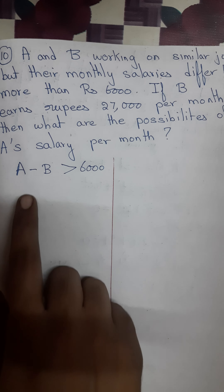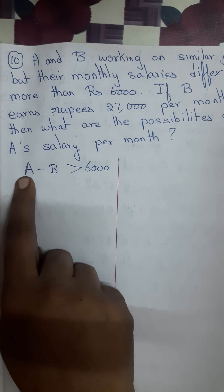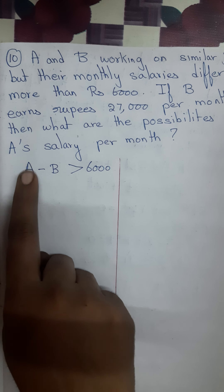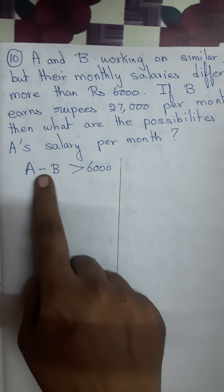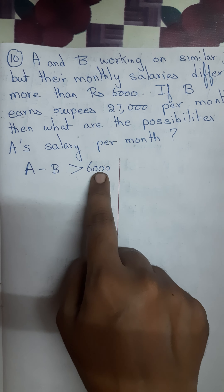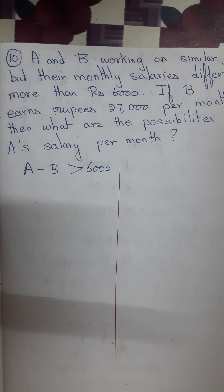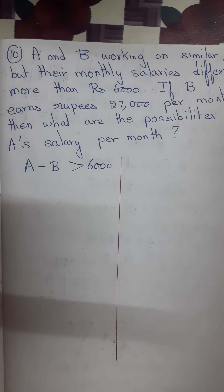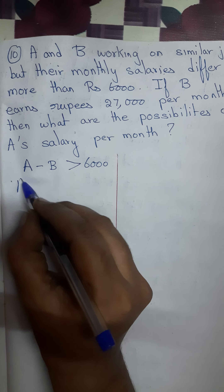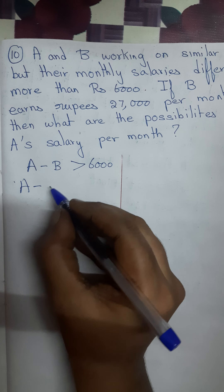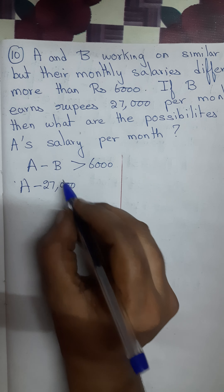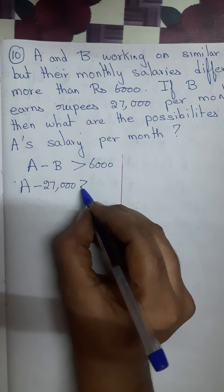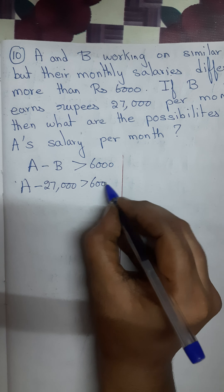There are 2 possibilities. The first possibility is maybe A is getting more salary. Suppose A is getting more salary, then A minus B should be greater than Rs. 6,000, because the difference of their salary is Rs. 6,000. We do not know A's salary, but B's salary is Rs. 27,000. So I can write: A minus Rs. 27,000 is greater than Rs. 6,000.